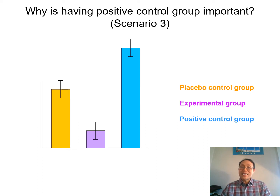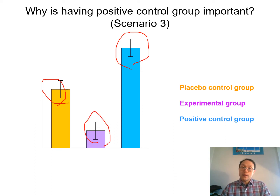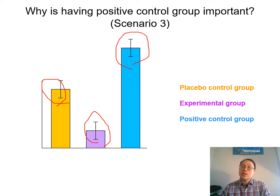In scenario three, the positive control group performs best, followed by the placebo control group, followed by the experimental group. This tells you that your experimental group is doing much worse than both the positive control and the placebo control. Even without knowing what the instrument readout means, this tells you the drug is not good — it's making patients worse. So it's really important to always have a positive control group to better understand the pattern of your data.